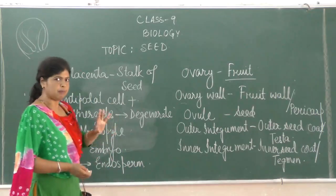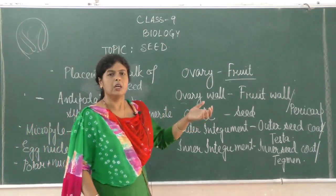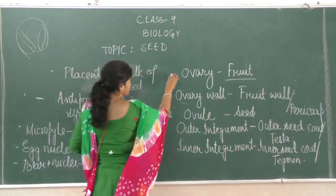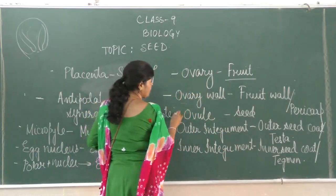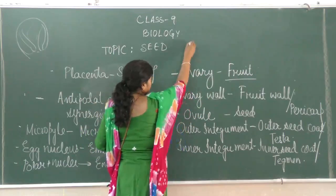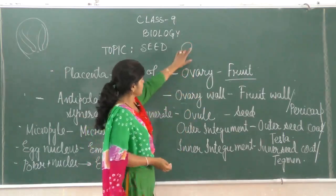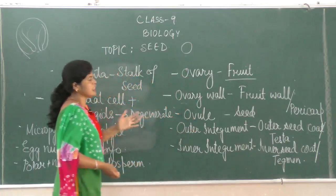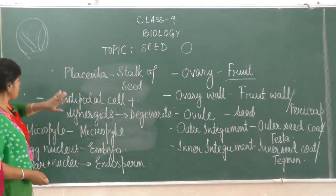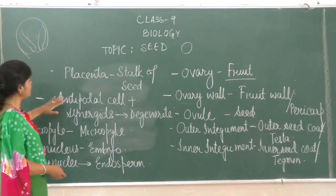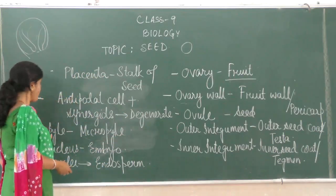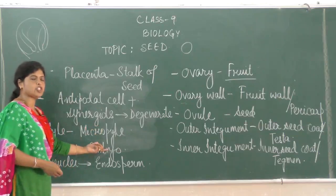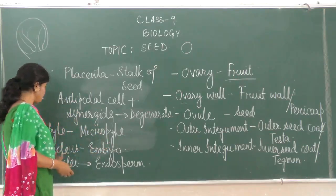So, to summarize the changes: the ovary on the whole becomes fruit; the ovary wall becomes the fruit wall, also called pericarp; the ovule on the whole becomes the seed. The outer and inner integuments form the outer and inner seed coats. The placenta forms the stalk of the seed. Antipodal cells and synergids degenerate. The micropyle remains as an opening. The egg nucleus after fertilization forms the embryo, and the polar nuclei form the endosperm.